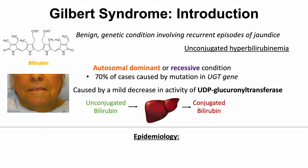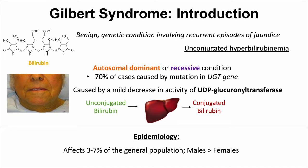What is the epidemiology of Gilbert syndrome? It is estimated to affect three to seven percent of the general population, though this varies by country. Generally around three to seven percent of the population may be affected, and males outnumber females with regards to Gilbert syndrome.